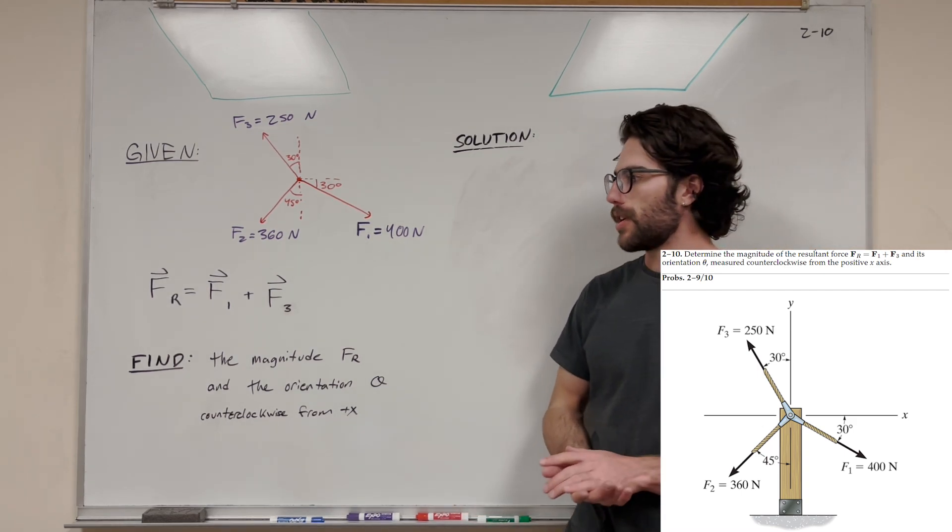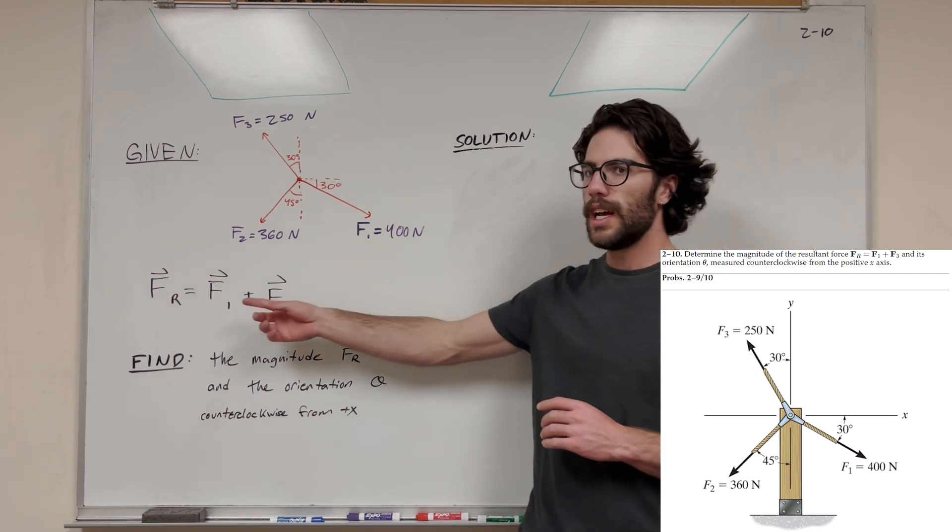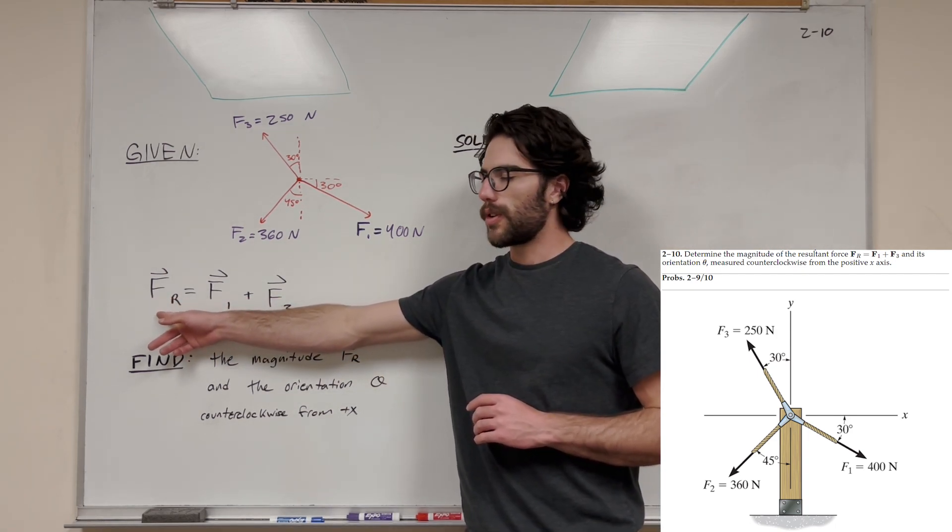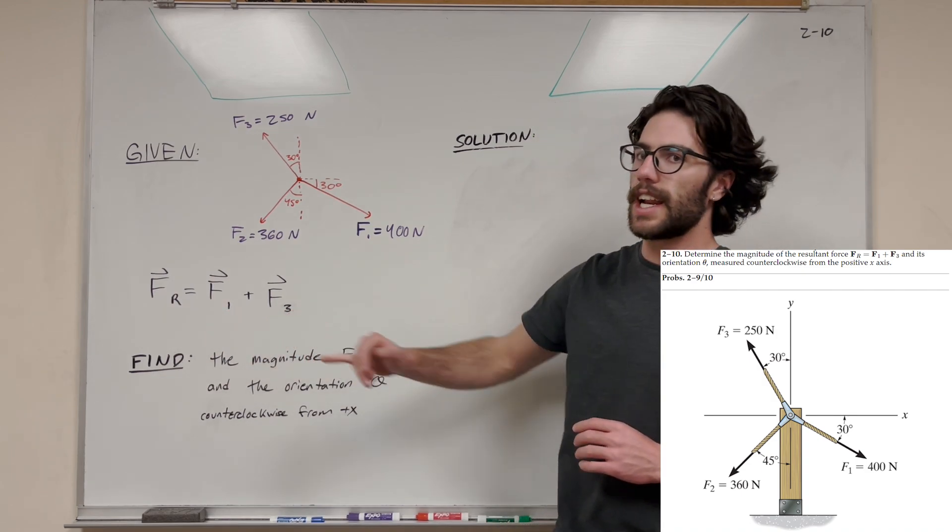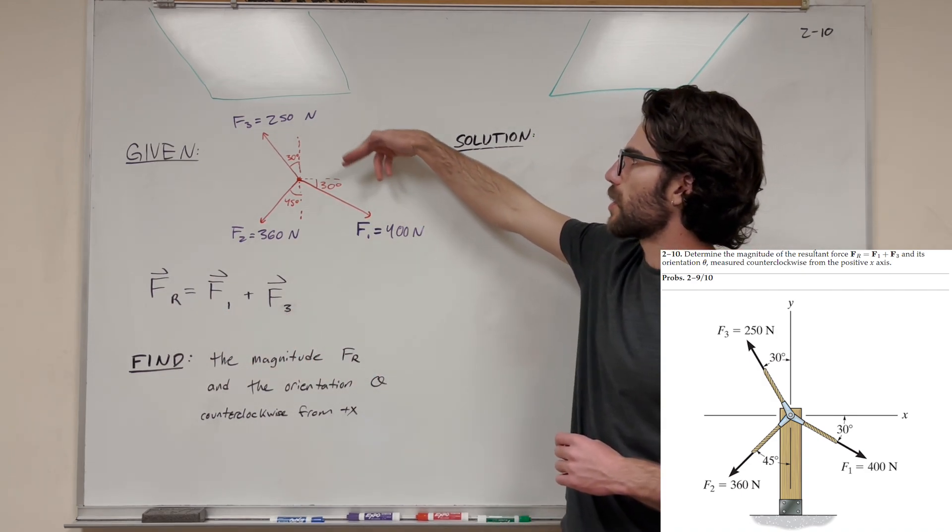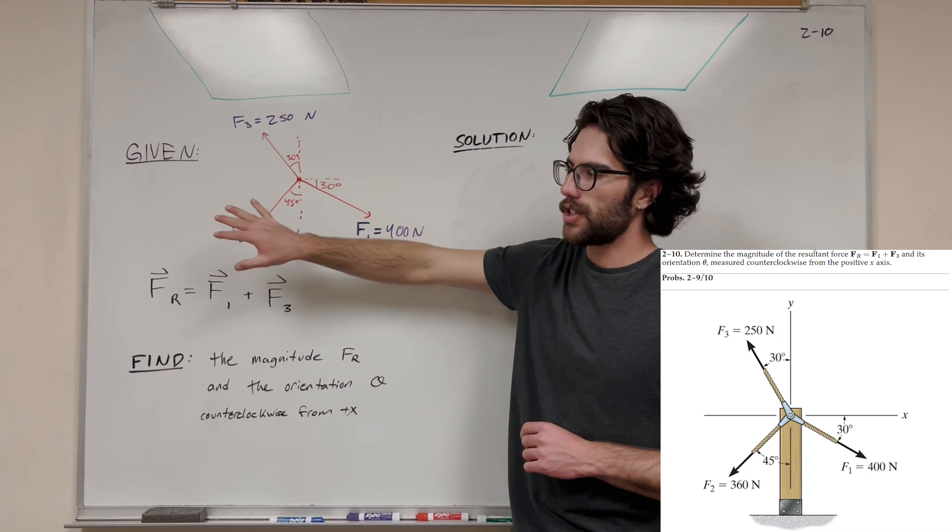We got this vector problem where we're trying to find the resultant force. The resultant force equals force vector 1 and vector 3 added together. We're just looking at vector 1 and vector 3 here. We can ignore vector 2 for this problem. Check out my video on 2-9 for that one.